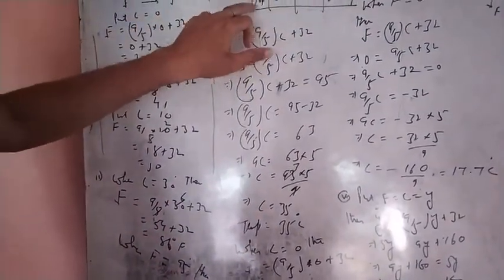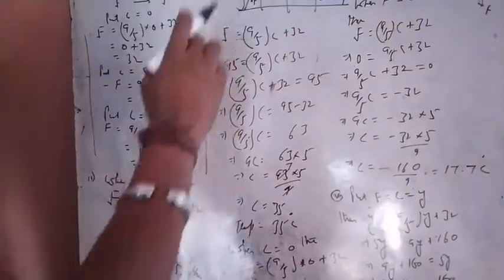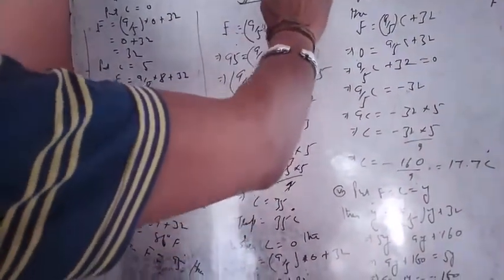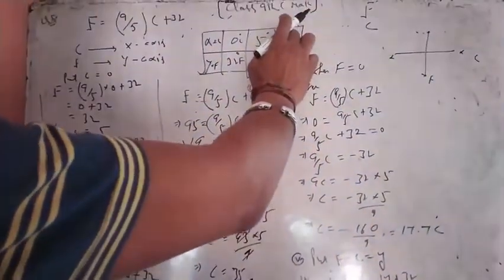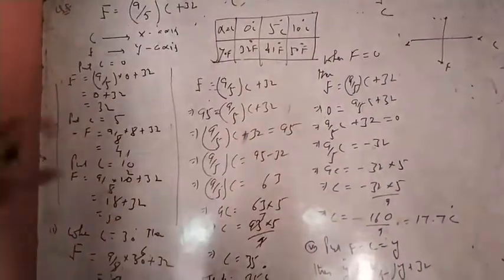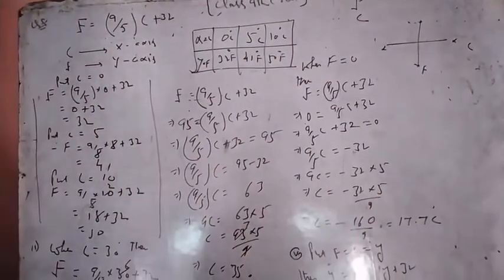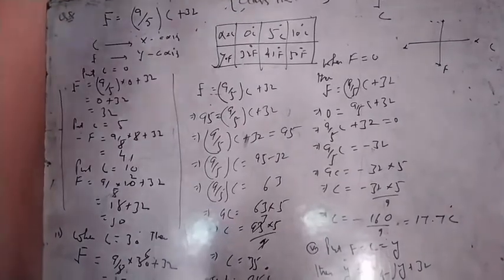X is Celsius, Y is Fahrenheit. When X is 0, Y is 32. When X is 5, Y is 41. When X is 10, Y is 50. So these are the points. We have to plot this graph.